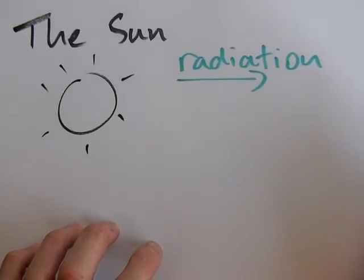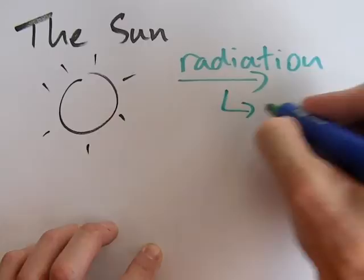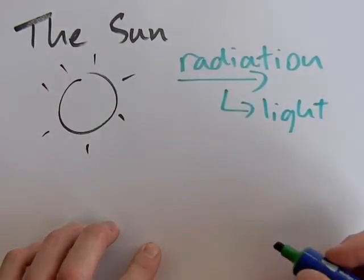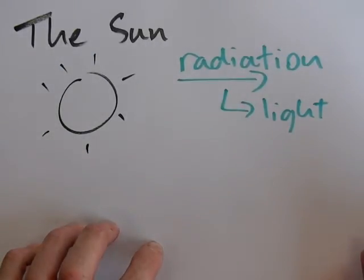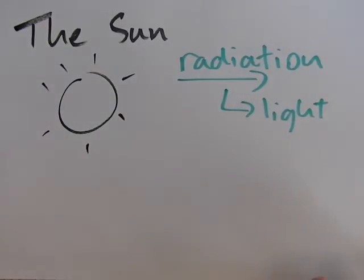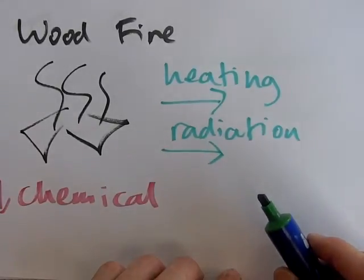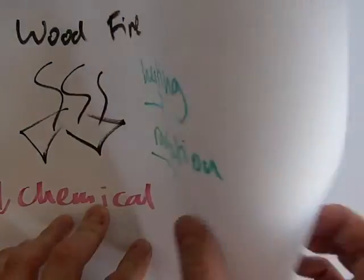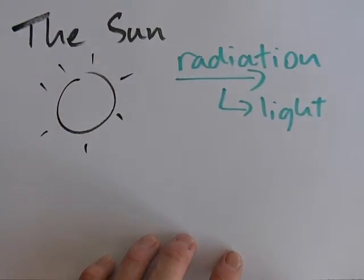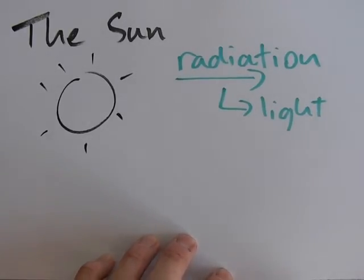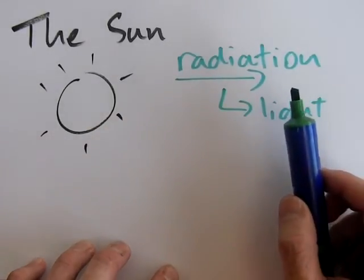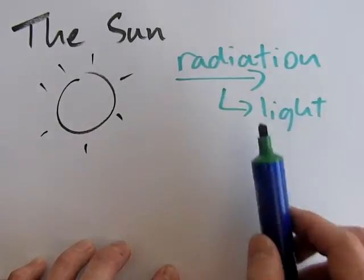We could break that radiation down into different parts: some is light, some is infrared which you feel as heat, and some is ultraviolet which is responsible for sunburn, plus other parts. Similarly, the wood fire emits light and infrared — we could break its radiation down further too. The cup, however, doesn't emit light — it's not a luminous object. If you turn all the lights off, a cup does not shine with light, unlike a wood fire or the sun. So the sun's transfer is by radiation, which we could break down into different categories.